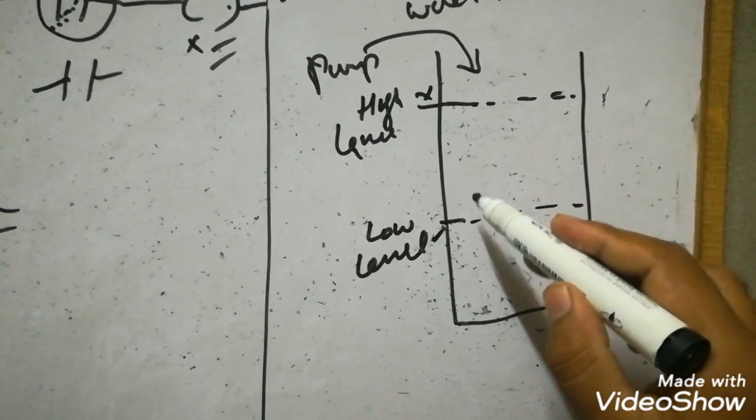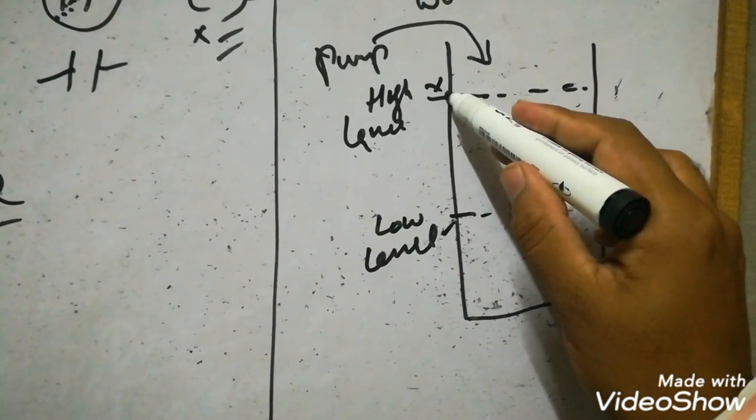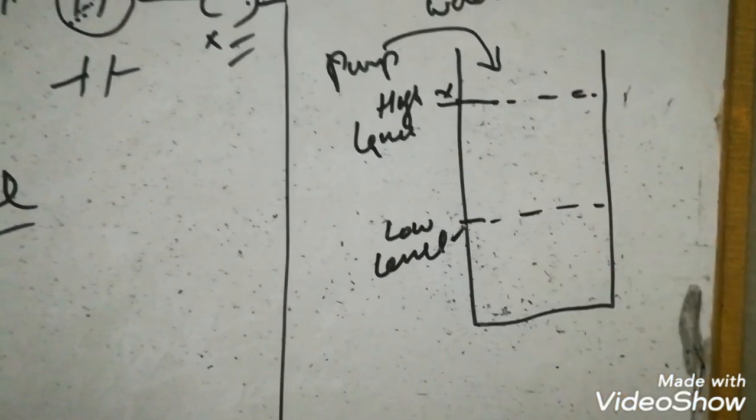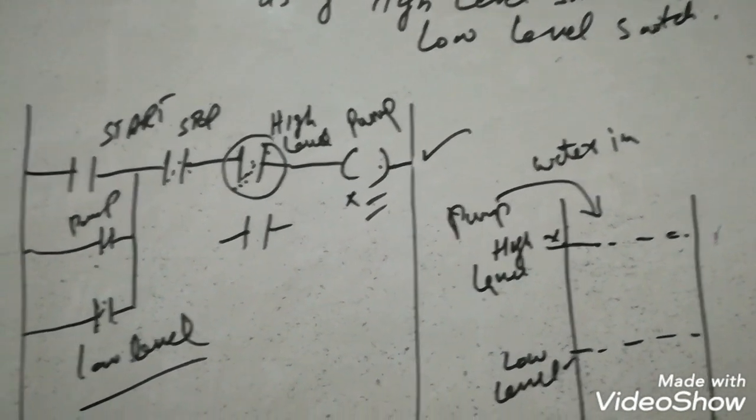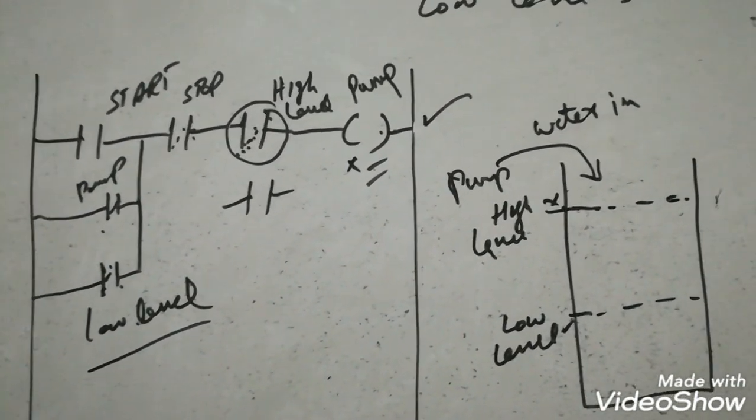And then level reduces and when it will be at the low level it will start again. So this is the ladder logic diagram for auto control of pump with level switch. I hope you have enjoyed this video.